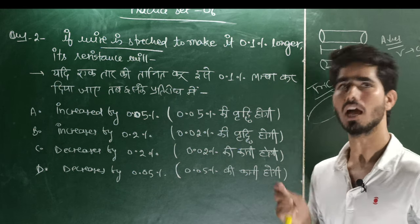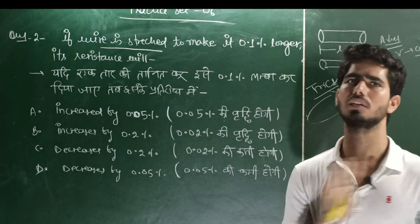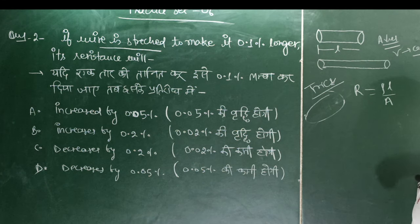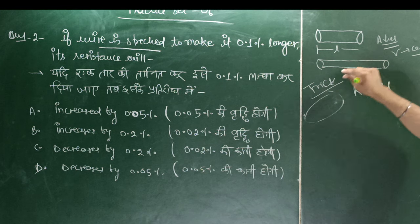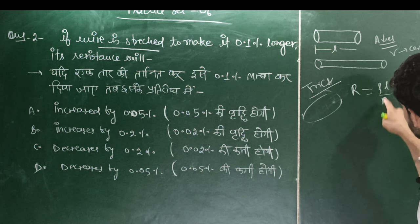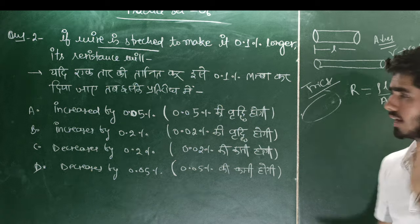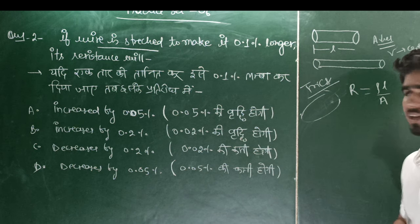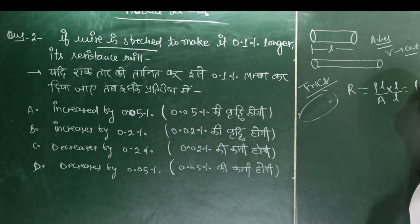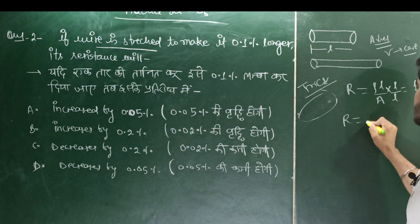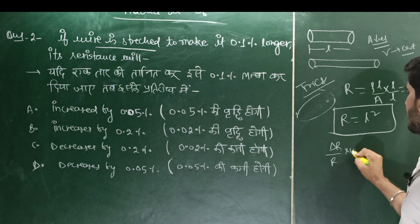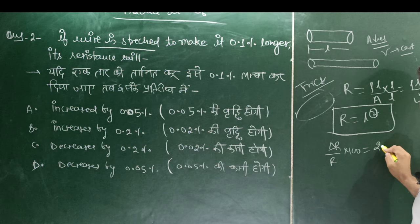Using the resistance-length relation with constant volume: R equals rho L squared upon volume (constant). So the formula becomes: ΔR/R × 100 equals 2 × (ΔL/L) × 100. Since the length change is 0.1%, the resistance changes by 2 × 0.1%.